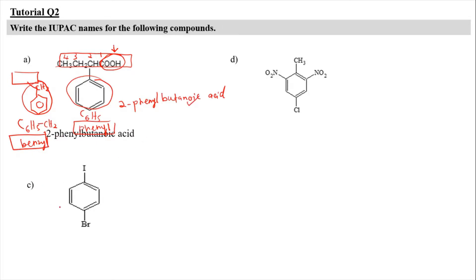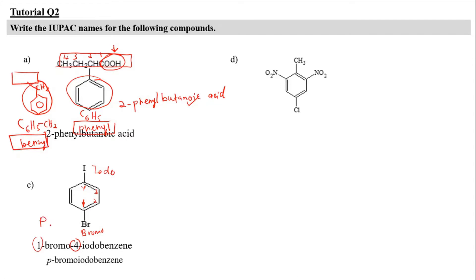For structure C, benzene is the parent and it is attached with two halogens. We number the halogens in alphabetical order — Br is bromo and I is iodo. Counting the positions: 1, 2, 3, 4 — it's going to be 1-bromo-4-iodobenzene. Alternatively, since positions 1 and 4 correspond to para, it can also be named para-bromoiodobenzene.